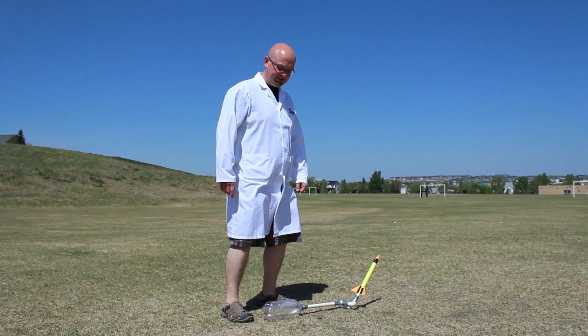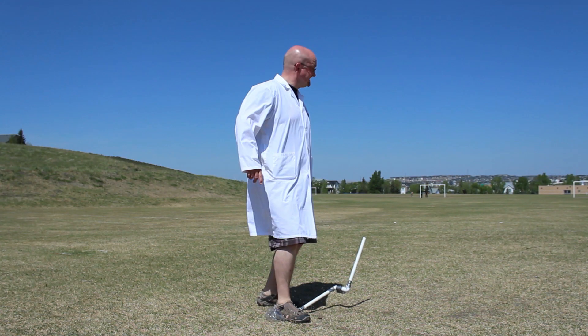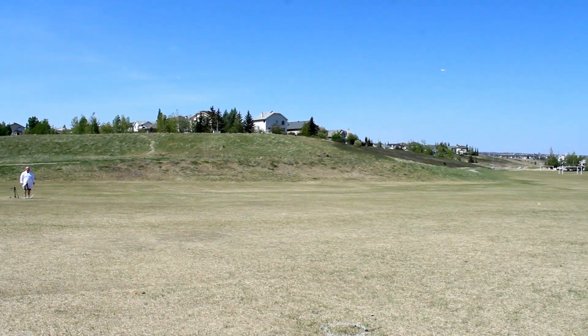With our rocket and launcher constructed, we're ready to move outside. With your launcher on the ground, stomp really hard on the 2-liter bottle. The rocket should quickly fly away a long distance.